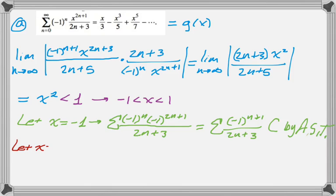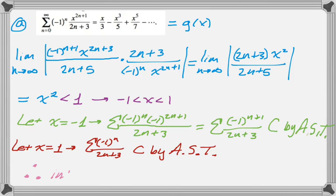Now we have to test x equals 1, which is a little less work, because the 1 to the 2n plus 1 is just 1, so we don't have to write it. So we have negative 1 to the n over 2n plus 3, and that also converges by the alternating series test. So to summarize, the interval of convergence is going to include both endpoints. So negative 1, less than or equal to x, less than or equal to 1. And that is part A.